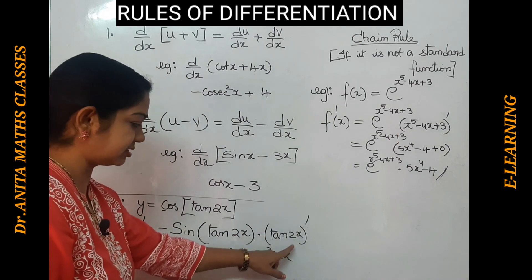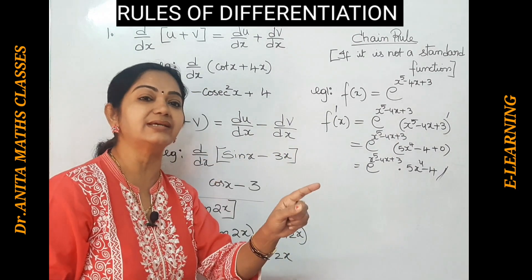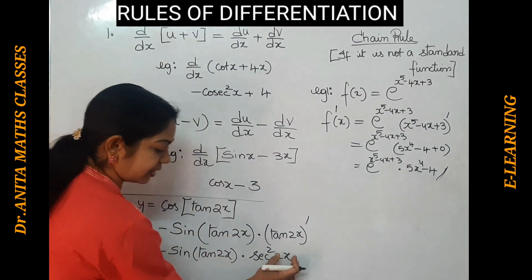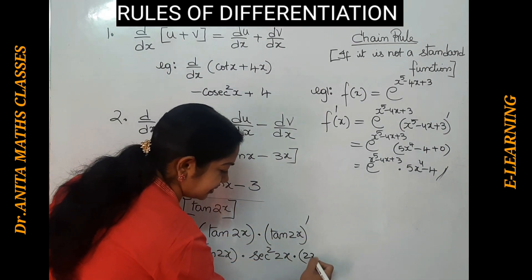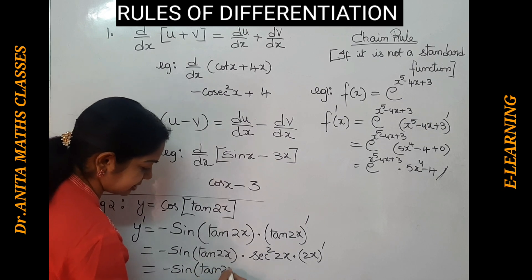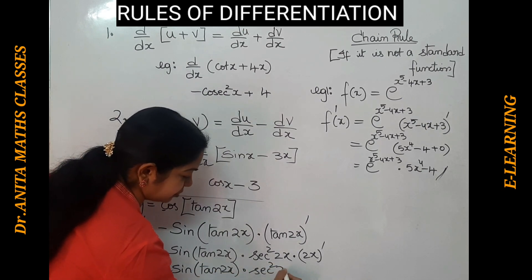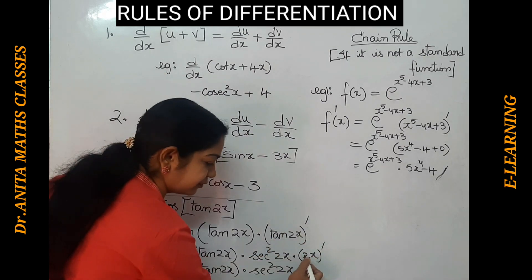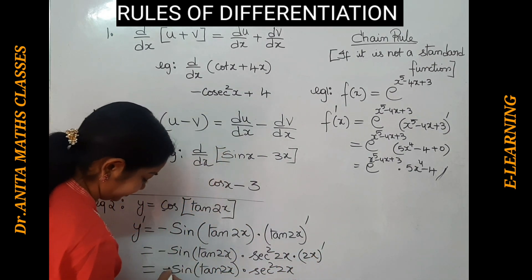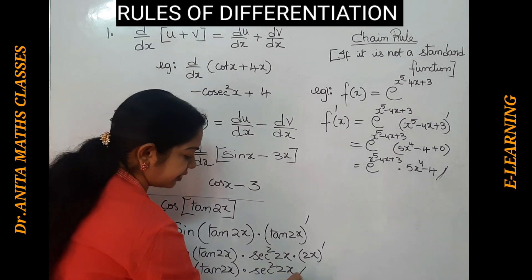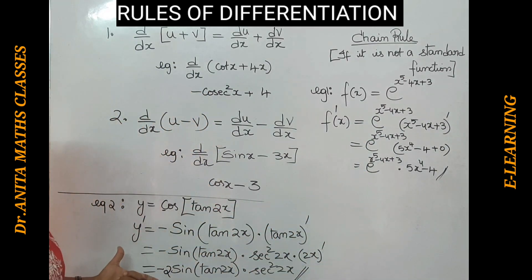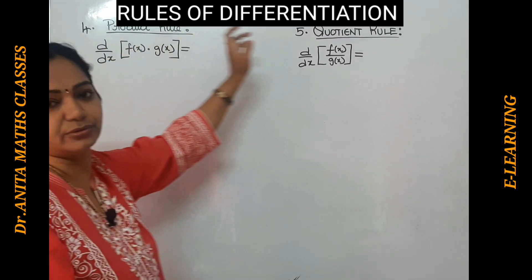We still haven't finished because 2x is not just x. So we must also differentiate 2x. The derivative of 2x is just 2. Therefore the final answer is minus sine(tan 2x) times sec²(2x) times 2. Likewise, in the chain process, until we get a normal function we keep on doing the derivative. Please pause and note this down.